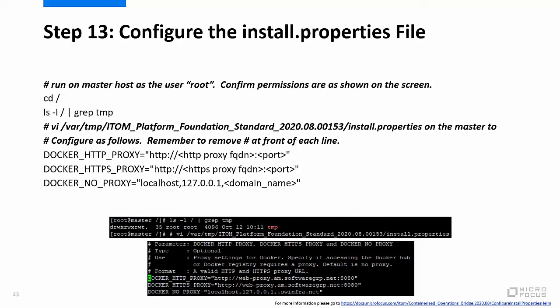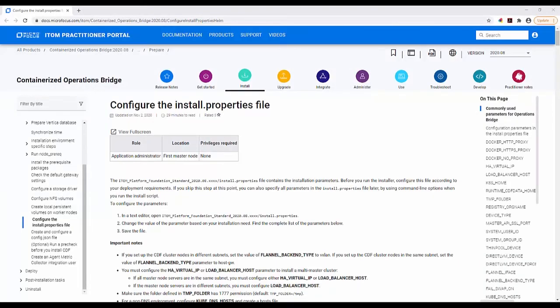Step 13 is to configure the install.properties file. Execute the commands shown on the screen on the master to configure the install.properties file. For more information on how to configure the install.properties file, please go to the URL shown on the screen.